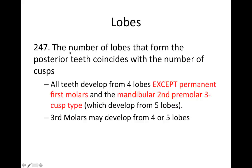Lobes. The number of lobes that form the posterior teeth is going to coincide with the number of cusps — that's just a general rule. And all teeth develop from four lobes. Here are the exceptions.